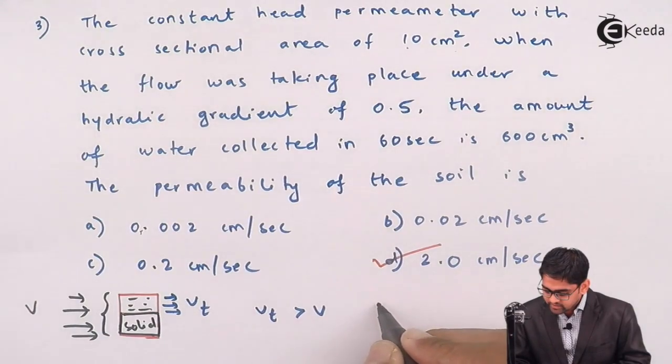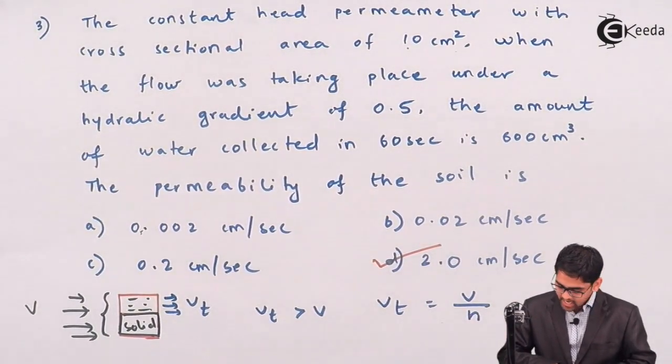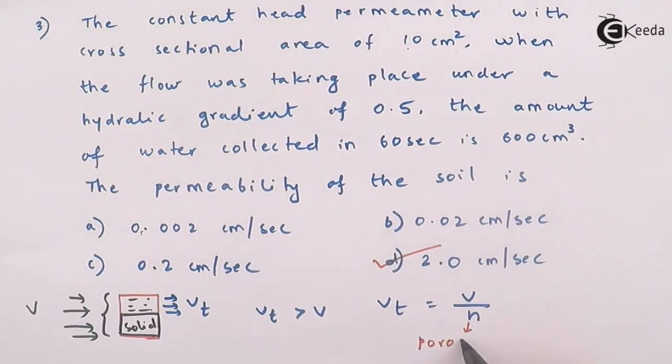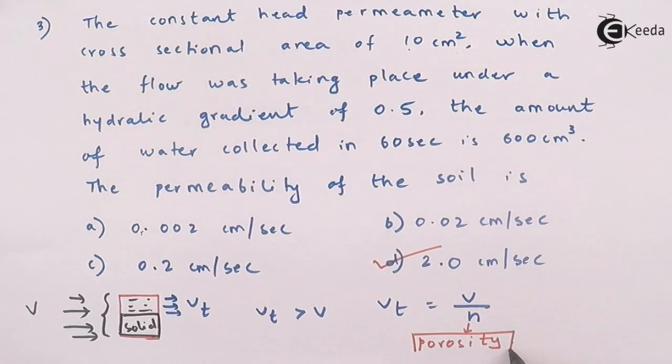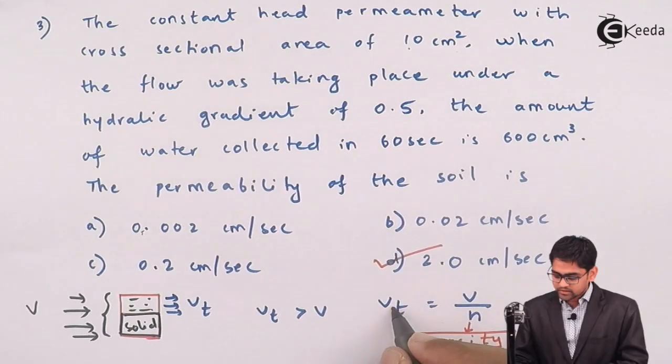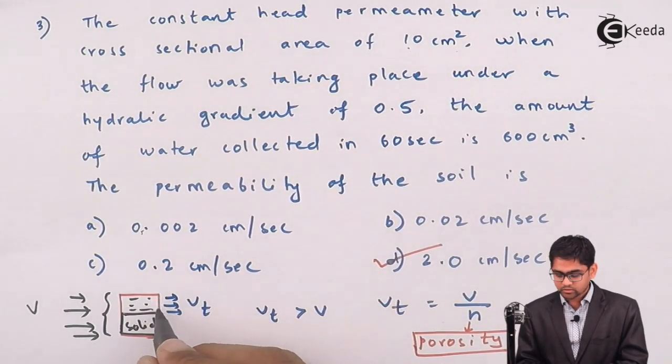And the relationship between Vt and V, we have seen Vt equals to V divided by N, where N is the porosity. So, the extension to this problem, they may give you the value of porosity of the soil, and they may ask you to calculate the true velocity which is occurring through the soil pores.